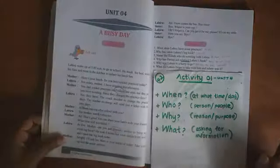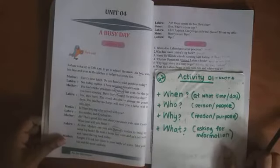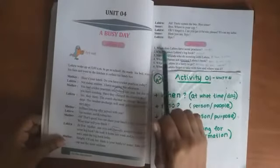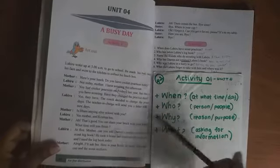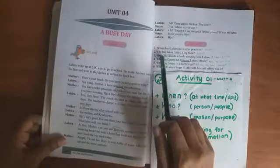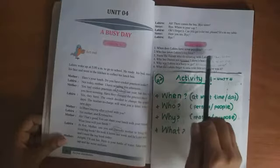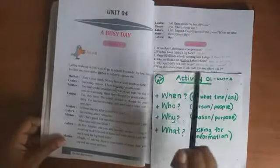Who has taken Lahiru's log book? Who is the person? You can find his name at the end of this part. I'm not going to tell you. You have to write the name. Name the friends who do scouting with Lahiru. Who are the friends? There are two friends: Ilham and Krishna. You have to write that.